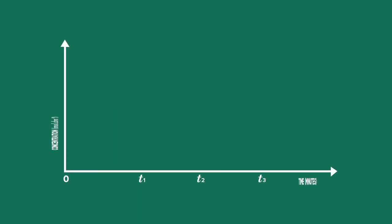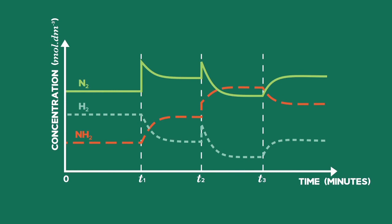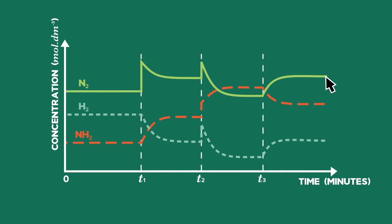Let's look at one more graph for interpretation. The graph of concentration versus time for the Haber process is given. Notice that we are now looking at concentration and not the rate of the forward and reverse reactions. Between zero and T1, the system is in equilibrium. At T1, N₂ spikes, indicating an increase in concentration of N₂. At T2, the pressure increases as shown by the spikes. At T3, the temperature increases, shown by the gradual change to the curvature.